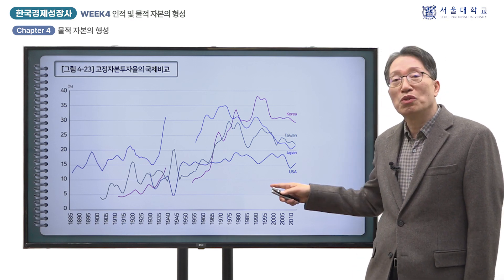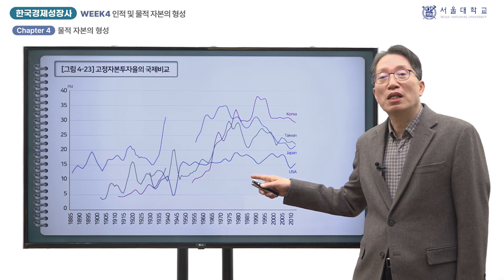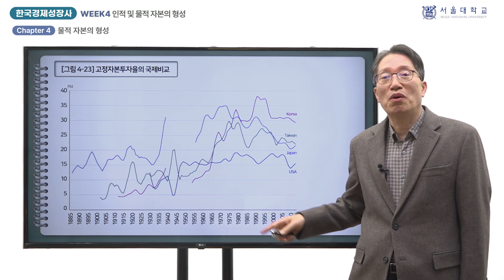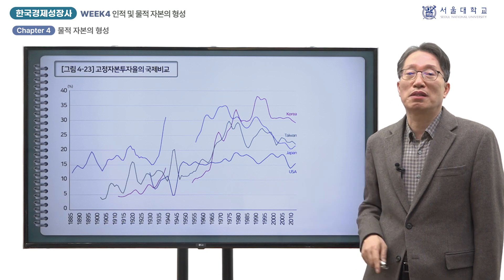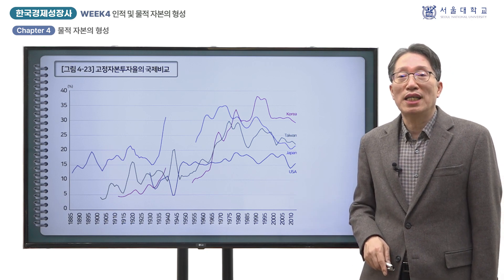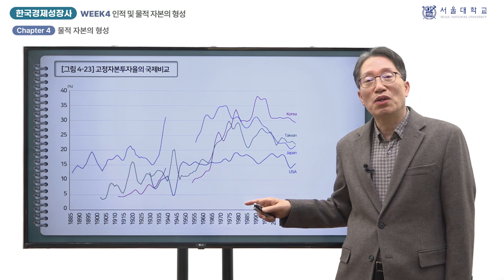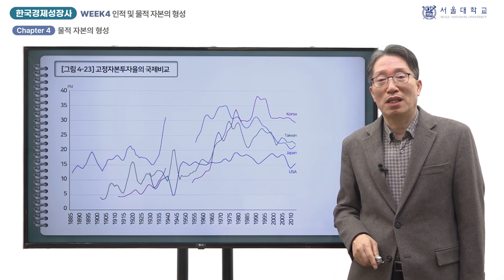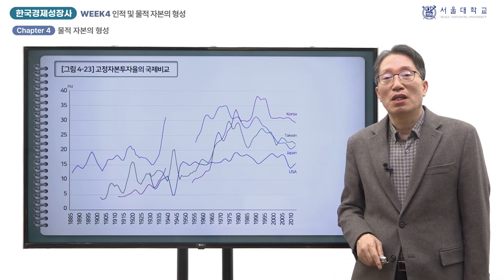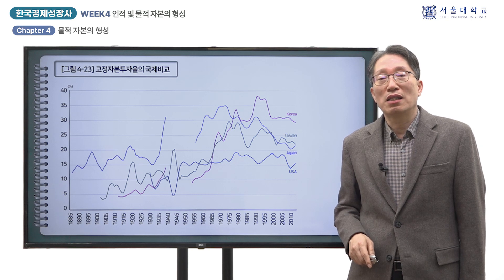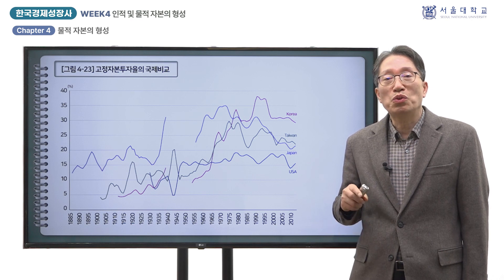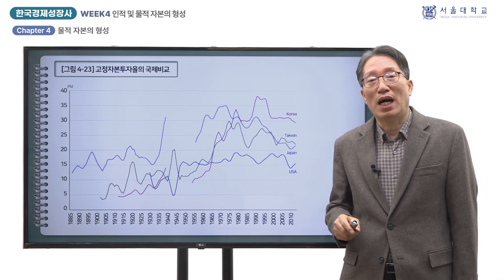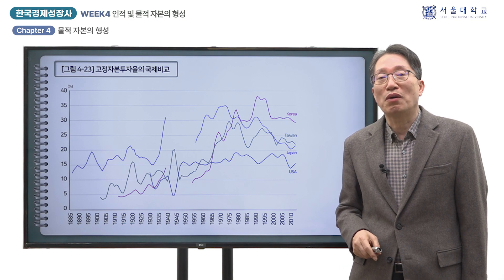미국의 경우를 보면 투자율의 급증과 하락이 심하지 않고 전후에는 15%에서 20% 수준에 머물러 있었습니다. 선진국의 투자율은 전후 대체로 20% 전후의 수준으로 나타납니다. 따라서 동아시아 국가들은 시차가 있지만 투자율의 급상승이 나타났고, 도달 수준 또한 다른 나라에 비해 매우 높았다는 특징을 공유하고 있다고 할 수 있습니다.